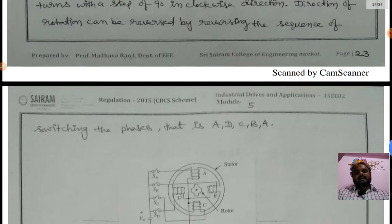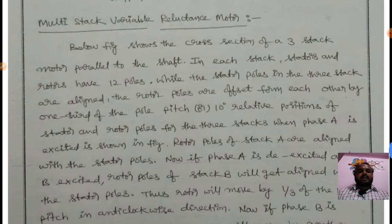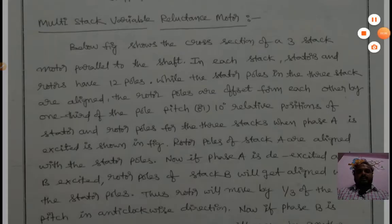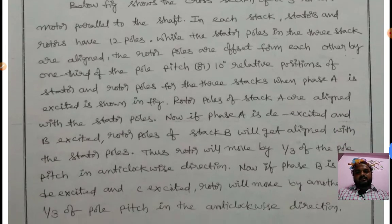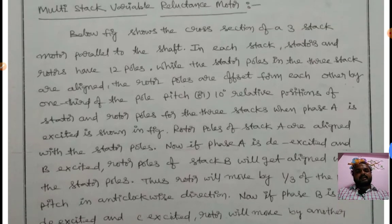Coming to the multi-stack variable reluctance motor, below figure shows a cross-section of three-stack motor parallel to the shaft. In each stack, stator and rotor have 12 poles. While the stator poles in the three stacks are aligned, the rotor poles are offset from each other by one-third of the pole pitch, 10 degrees. When phase A is excited as shown in figure, rotor poles of stack A are aligned with the stator poles.